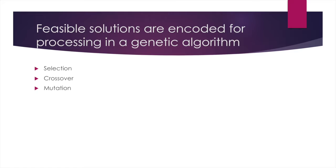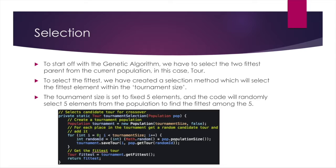Hello, my name is Jordan Chen, and I will be talking about the three main methods of this genetic algorithm code. First one being the selection method. So to start off with the genetic algorithm, what we have to do is find the two fittest parents from the current population. To select the fittest, we have to first create a selection method which will select the fittest element within a set tournament size. In our case, the tournament size is set to a fixed five elements. The code you see below will randomly select five elements from the population and will then find the fittest among the five. This method will then return one fittest element among the five.